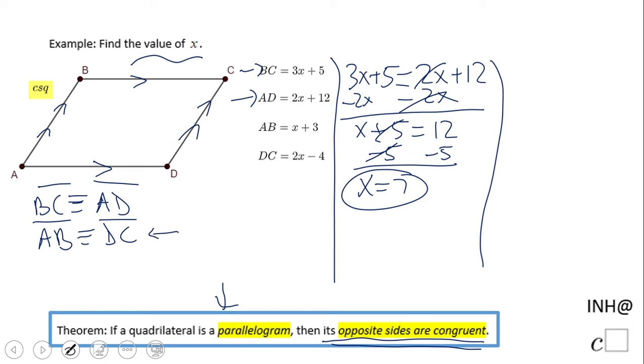So we're going to have x plus 3 equals 2x minus 4. And again here I'll subtract x and then I will add 4.